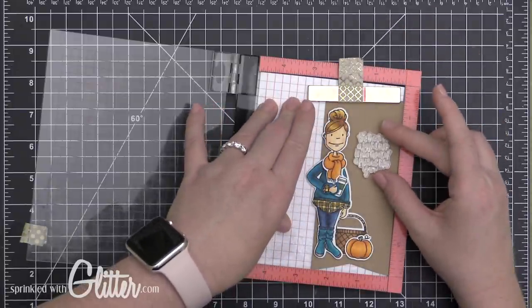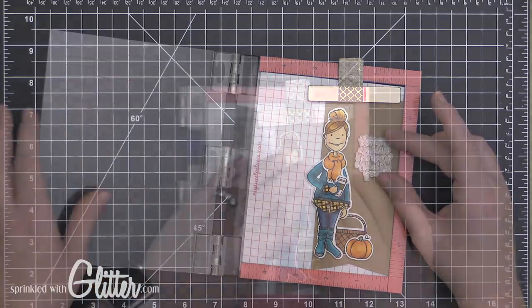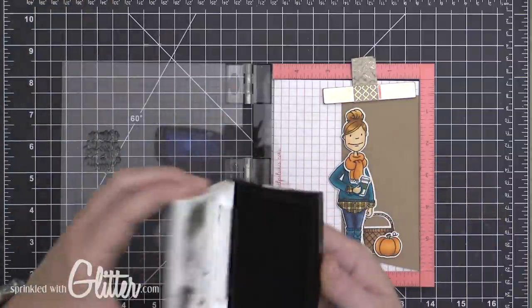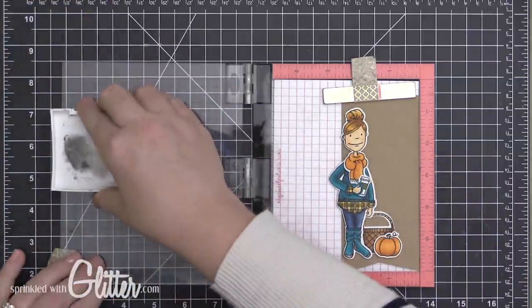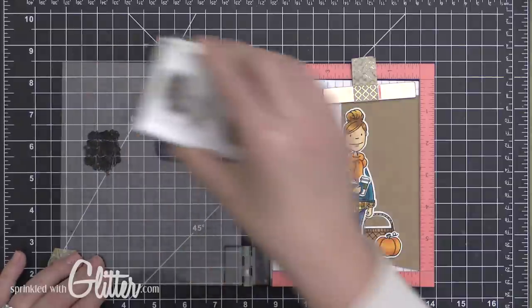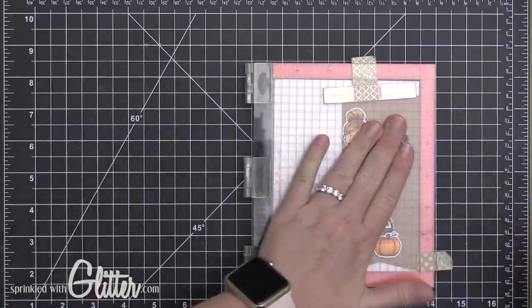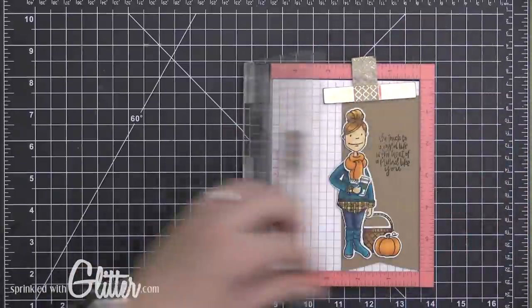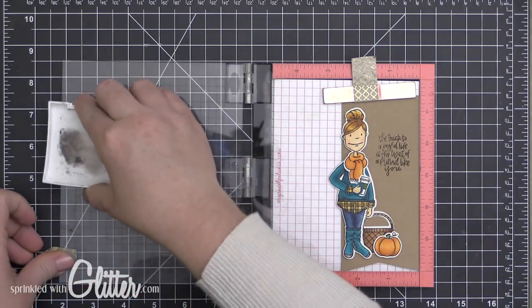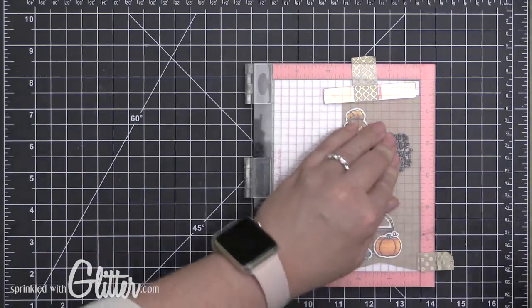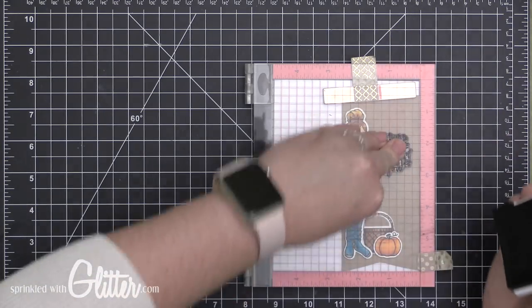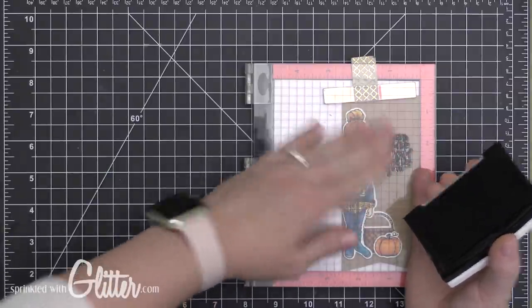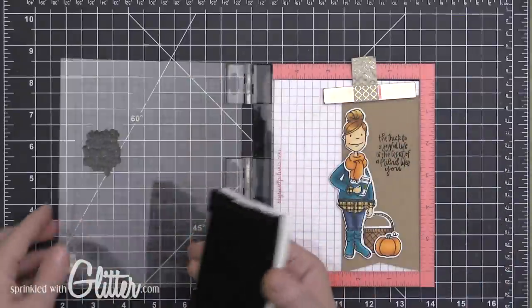Then I'm going to take the sentiment that says 'The trick to a joyful life is the treat of a friend like you,' and I'm going to use my MISTI to stamp this onto this cardstock. Because the cardstock does have a lot of texture and dimension to it, I wanted to be able to double stamp this sentiment and be sure that I was getting it in the same place. I lined it up on my MISTI, closed the door to mount the stamp to the lid, and I'm going to stamp it in some VersaFine Onyx Black ink. I'm going to double stamp it. Once again, I just re-inked it and then stamped it down, making sure I press really well because of the texture of this cardstock. Then I'm left with this little piece here that I can throw on a card front and have a completed card project.